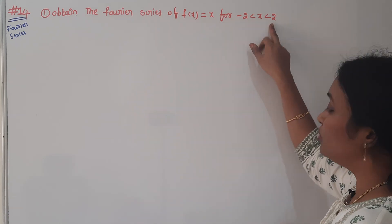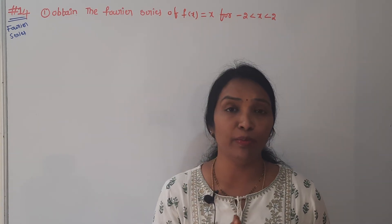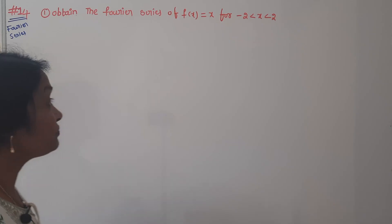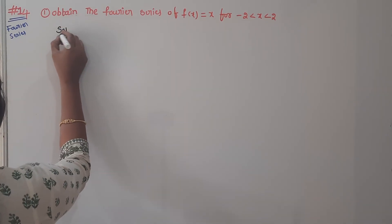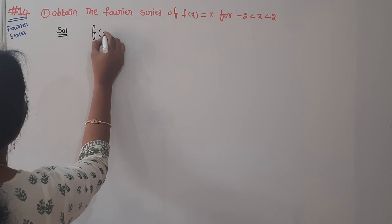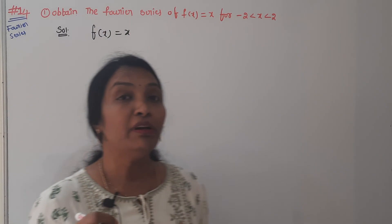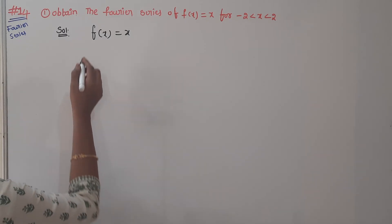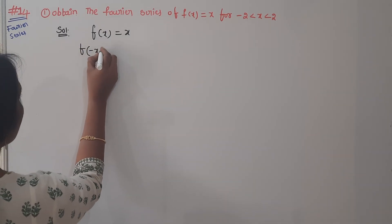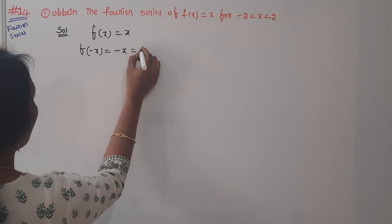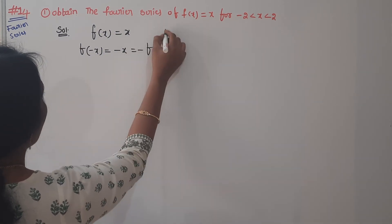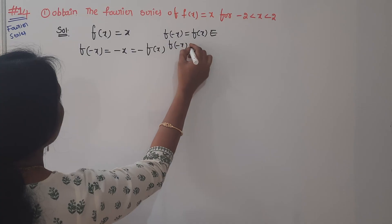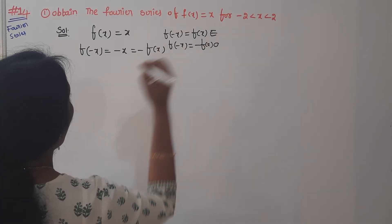Obtain the Fourier series of the function. What do we do? The interval is minus 2 to 2. The interval will decide — minus pi to pi, minus 1 to 1, minus 2 to 2. We will check odd and even. What is the function here? F of x is equal to x. If you substitute f of minus x, you get minus x, which means it is an odd function.